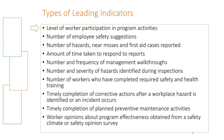There are several types of leading indicators, including: level of worker participation, number of employee safety suggestions, number of hazards, near misses, and first aid cases, amount of time taken to respond to reports, number and frequency of management walkthroughs, and number and severity of hazards identified, among others. They all share one important element in common: they indicate the state of health and safety before a negative event would have occurred.